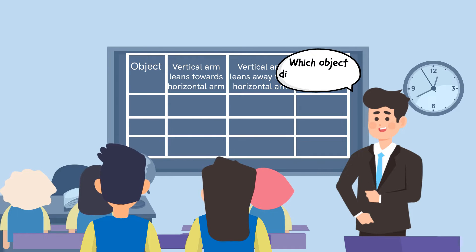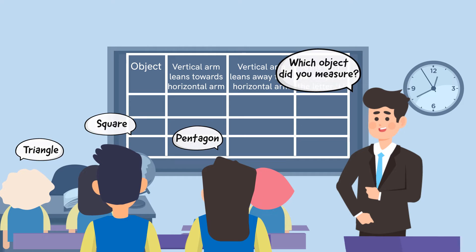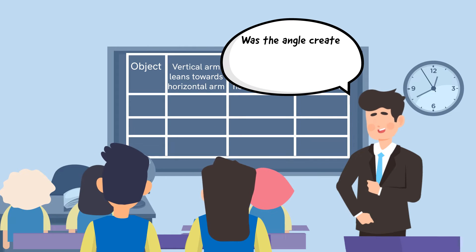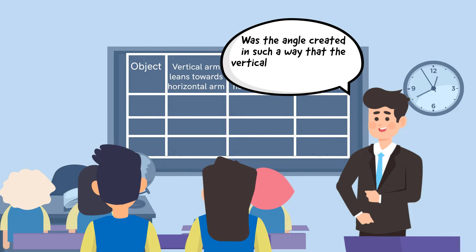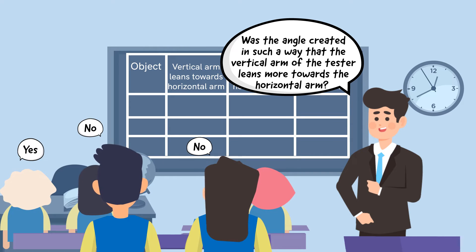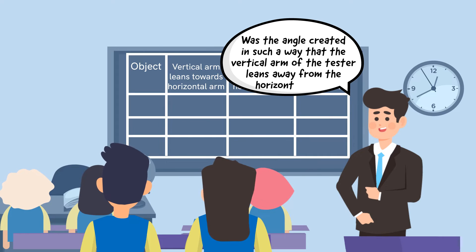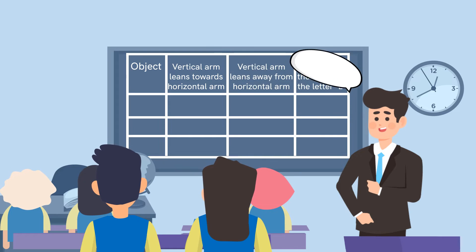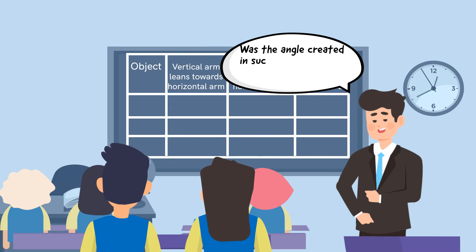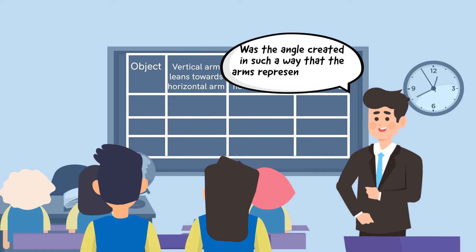Which object did you measure? Was the angle created in such a way that the vertical arm of the tester leans more towards the horizontal arm? Or was the angle created in such a way that the vertical arm leans away from the horizontal arm? Or was the angle created in such a way that the arms represent the shape of the letter L?